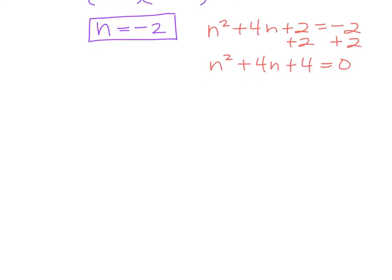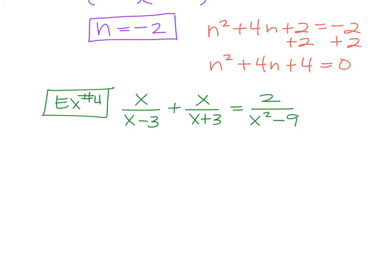Example 4. This one you have x over x minus 3 plus x over x plus 3 equals 2 over x squared minus 9. Do you see what you should do first here? Difference of squares. Right. So this, what's x squared minus 9? x plus 3 times x minus 3. Right. x plus 3 times x minus 3.